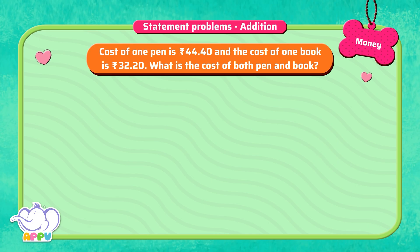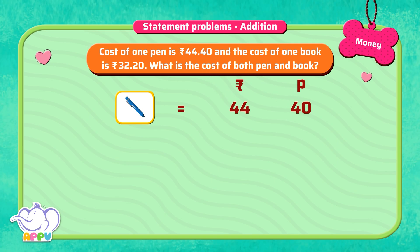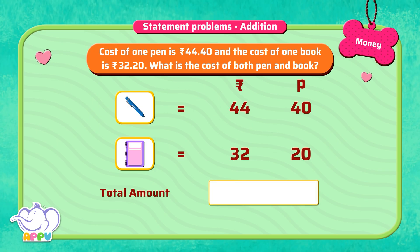The cost of one pen is 44 rupees 40 paise and the cost of one book is 32 rupees 20 paise. What is the cost of both the pen and book? We know the cost of the pen is 44 rupees 40 paise and the cost of the book is 32 rupees 20 paise. To find the cost of both the pen and book, we add each of their costs: 44 rupees 40 paise plus 32 rupees 20 paise.